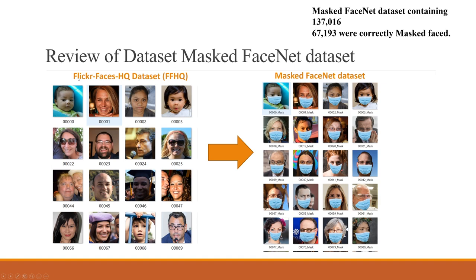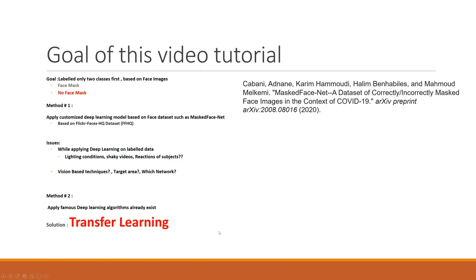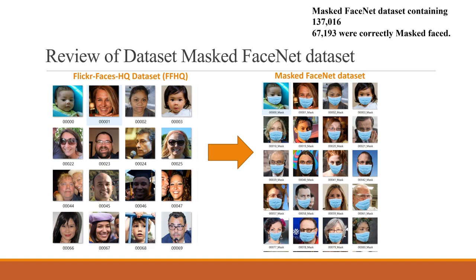Previously there was a dataset of faces called the Flickr face dataset, which contains 137,016 images of different faces with different races and ages. Recently in August 2020, authors developed a paper called MaskFaceNet and a corresponding dataset. They created the same face with a mask — with different orientations, rotations, and scaling — making a new dataset.